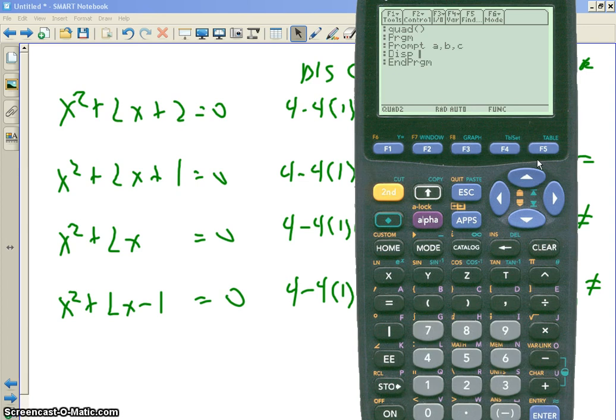You plug in 1, 2, 2. You get negative 4. Whatever it was. Right? So I'm going to make a function called discriminant. Alpha D. Alpha I. Alpha S. Alpha C. Or C. There it is.